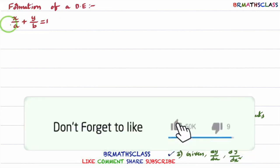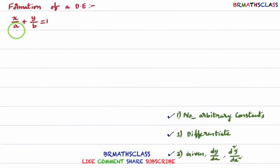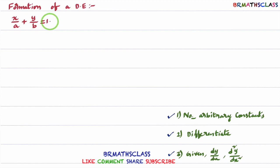Now observe this problem. What are the arbitrary constants and what is a fixed constant? A is an arbitrary constant because we know A is a constant but we don't know its exact value — we can choose any. That's why A is an arbitrary constant. Similarly, B is a constant whose exact value we don't know, so B is an arbitrary constant. Some people may confuse with the number 1 — it is a constant, but it is a fixed constant, not an arbitrary constant.